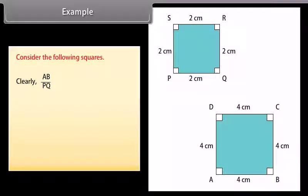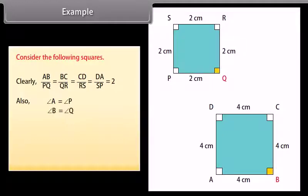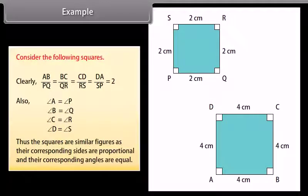Example: consider the following squares. Clearly AB upon PQ equals BC upon QR, which equals CD upon RS, equals DA upon SP, which is equal to 2. Also, angle A equals angle P, angle B equals angle Q, angle C equals angle R, angle D equals angle S. Thus, these squares are similar figures as their corresponding sides are proportional and their corresponding angles are equal.